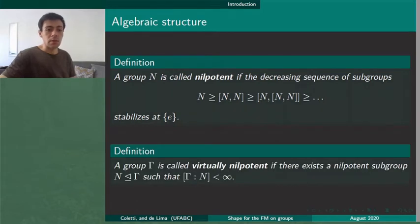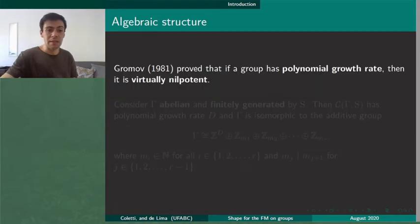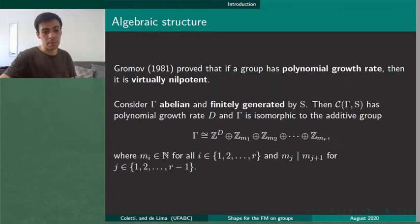Here we can find the definition of nilpotent groups and virtually nilpotent groups. This is important for us because groups of polynomial growth rate are actually characterized as virtually nilpotent groups. Here we can see the case where Γ is abelian and in that case we know that Γ is isomorphic to Z^d with a torsion subgroup.